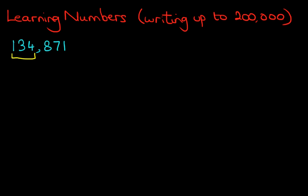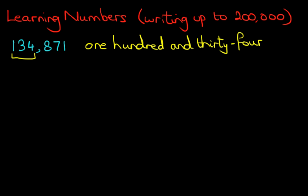So let's do that. We've got one hundred and thirty-four thousand. So that is the first part. One hundred and thirty-four thousand. We can put a comma after it.